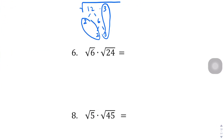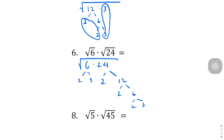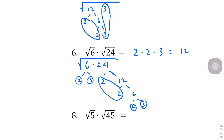6 and 24 — you can put these all under the same square root sign. 6 breaks down to 2 and 3. 24 breaks down to 2 and 12, which is 2 and 6, which is 2 and 3. Now, this 2 happens twice, this other 2 also happens twice, and this 3 also happens twice. So we get a 2, a 2, and a 3 coming out. Multiplying those down: 2 times 2 times 3 equals 12. More accurately, plus or minus 12.